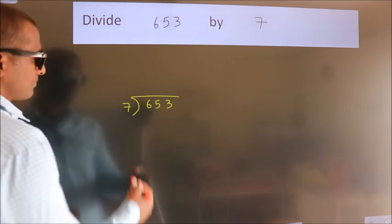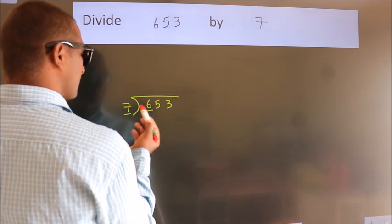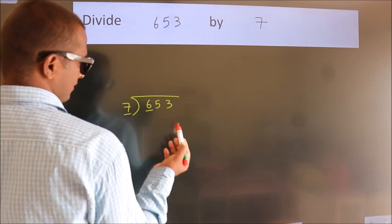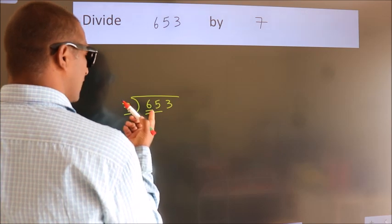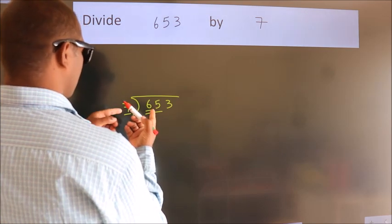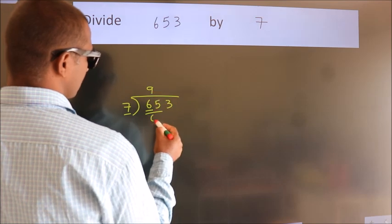Next. Here we have 6, here 7. 6 is smaller than 7, so we should take two numbers: 65. A number close to 65 in the 7 table is 7 nines, 63.